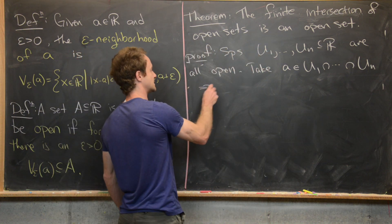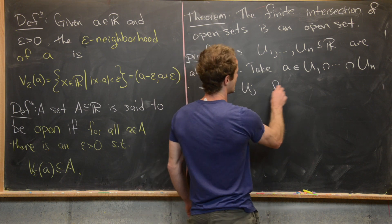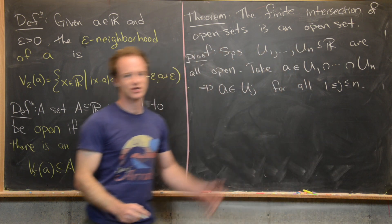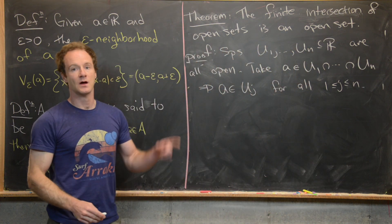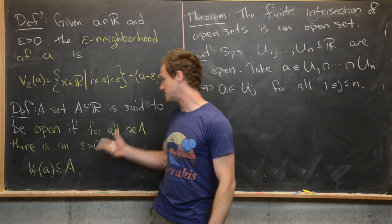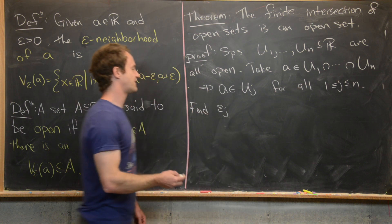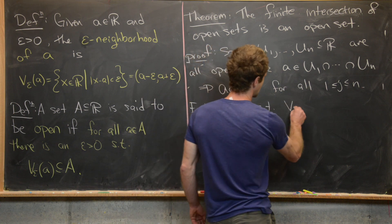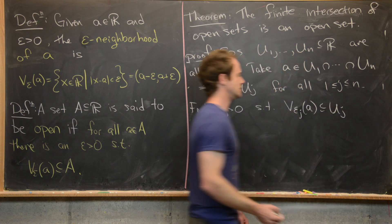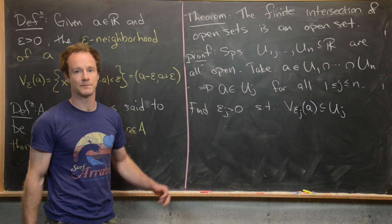By the definition of intersection, a is an element of U_j for all j from 1 to N — intersection is like an 'and' statement. Since each U_j is open, we can find an epsilon_j greater than zero for each such that V_{epsilon_j}(a) is a subset of U_j, using the definition of openness.